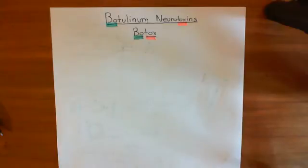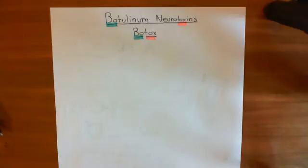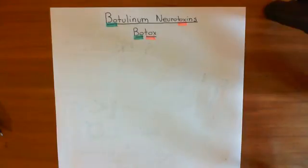We're then going to have a brief discussion of the bacterial species Clostridium botulinum — not how it releases the toxin, but how the toxin gets into neurons, and then what it does once it's in the neurons: which SNAREs it cleaves, and how that leads to botulism and can lead to death.